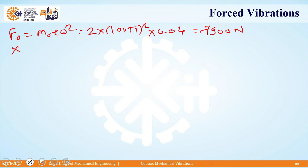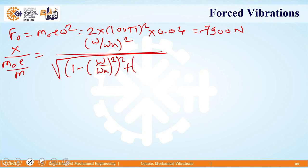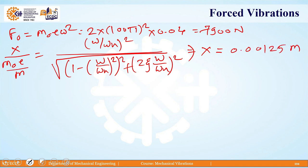To get the value of x, we use the equation: x divided by (m₀E/m) equals (omega/omega_n)² divided by the square root of [1 − (omega/omega_n)²]² + [2ζ(omega/omega_n)]². Putting in all the values, the amplitude x comes out to 0.00125 meter, which is 1.25 mm.